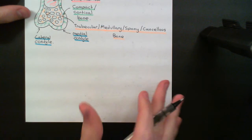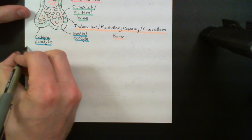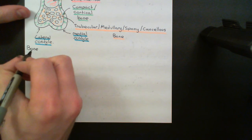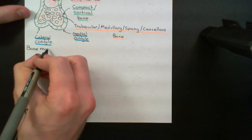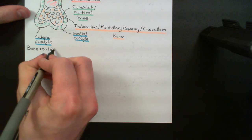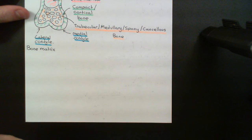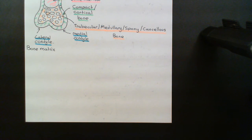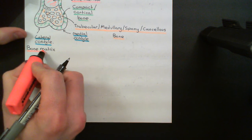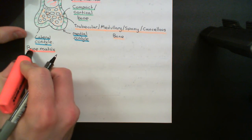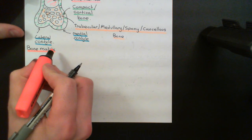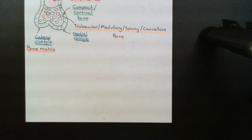The bone matrix is made up of loads of proteins, and the protein it is principally made up of is collagen. It's called the bone matrix for the same reason the connective meshwork surrounding cells is called the extracellular matrix — and in fact it's very similar to the extracellular matrix, with collagen as one of the principal components.